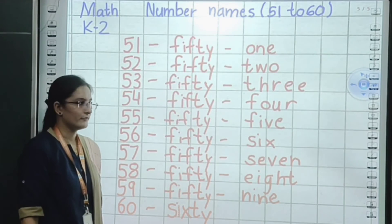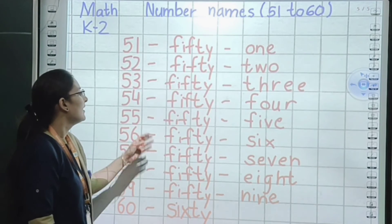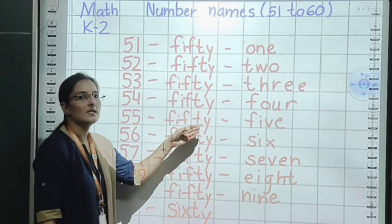Now we will again repeat all the spellings. Start from here. 51: F, I, F, T, Y — fifty, small sleeping line, O, N, E — one. 51 is fifty-one. Next: 52: F, I, F, T, Y — fifty, small sleeping line, T, W, O — two. 52 is fifty-two.